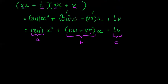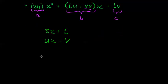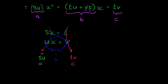Let me show what happens when I take (sx + t) and (ux + v). Multiplying top times top: s times u equals a. Bottom times bottom: t times v equals c. But when I multiply across — s times v, and then t times u — and add them together, I get b. This is the introduction to the cross method.